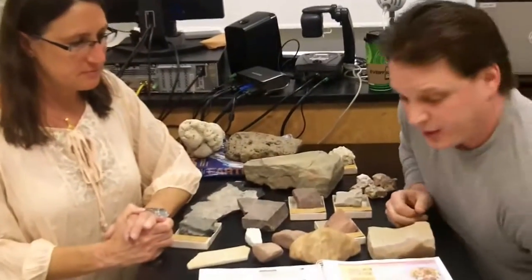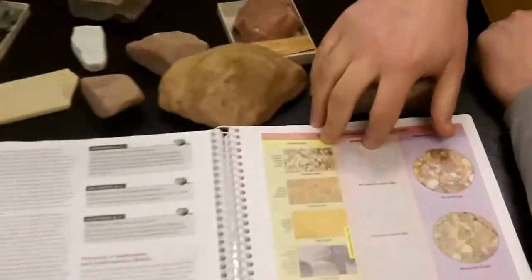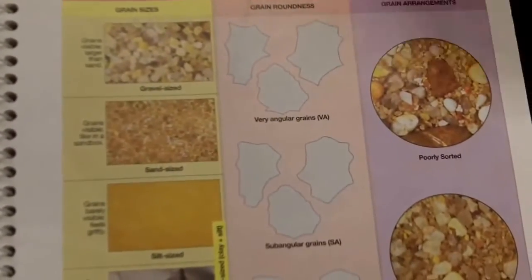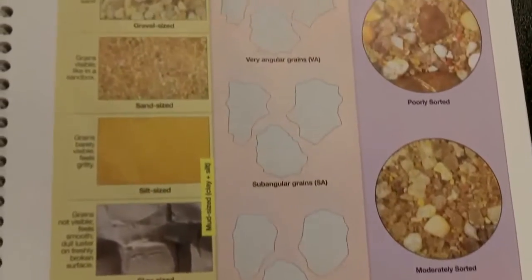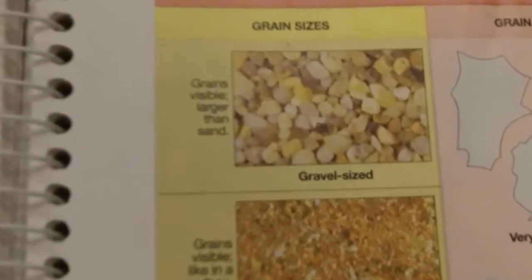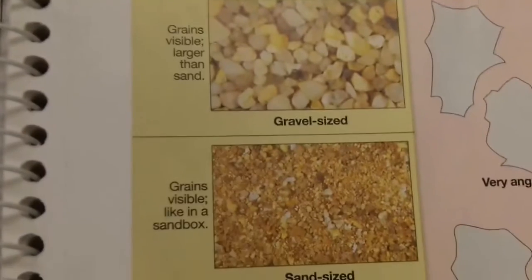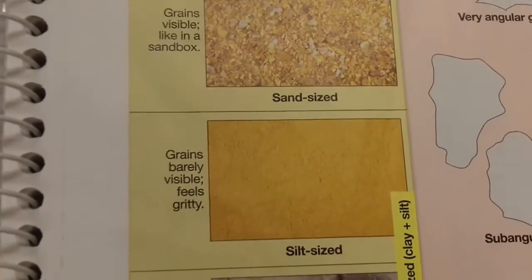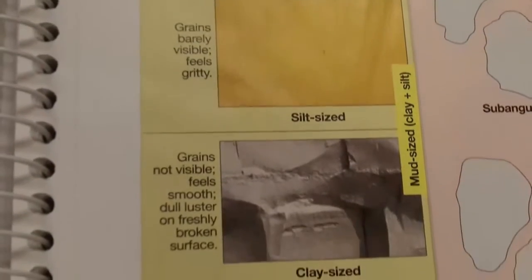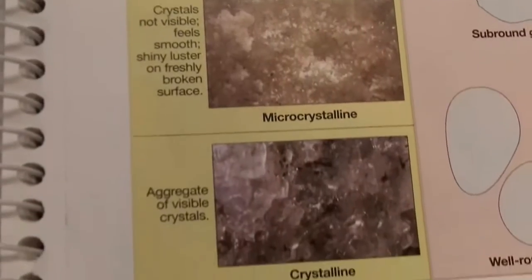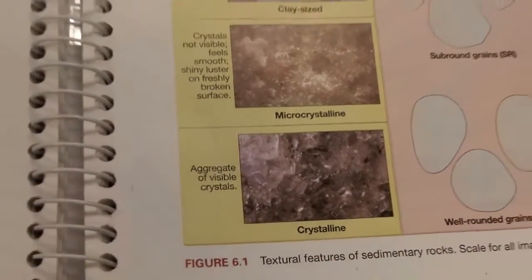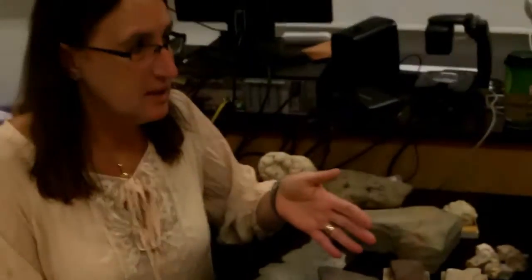Alright, well we should start over here with this diagram — and you're going to have this available to you in class when we do our rock identification lab. The first thing we want to talk about is just a quick recap of grain sizes. We mentioned this in the video on sedimentary environments, but we're going to talk about it again briefly because it plays a really important role in identifying sedimentary rocks. So on this one we're talking about one of the groups of sedimentary rocks which we're going to call either clastic — made of little clasts or sediment grains — or detrital.